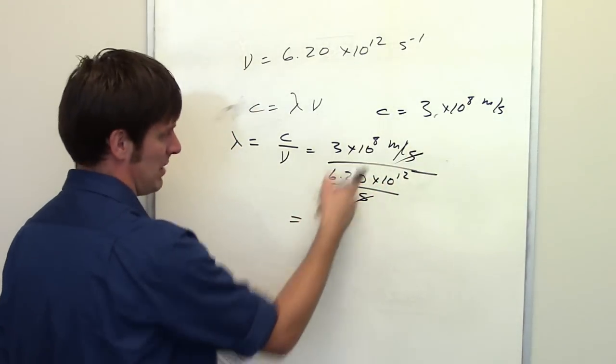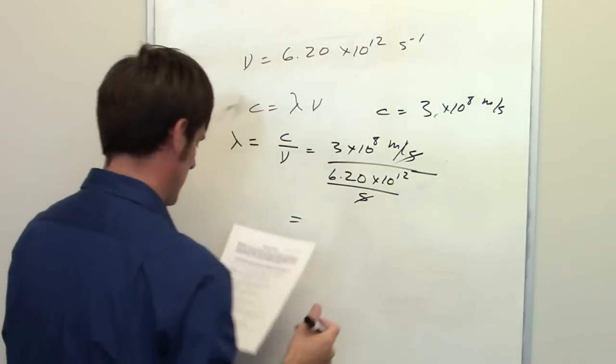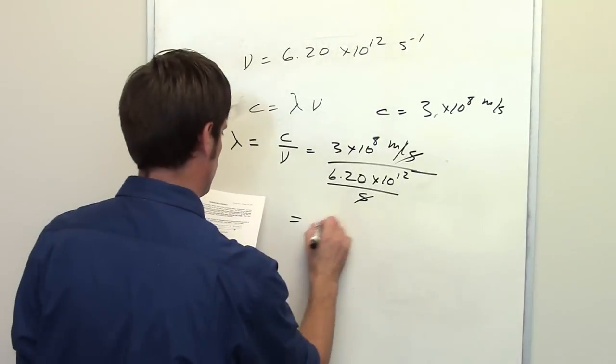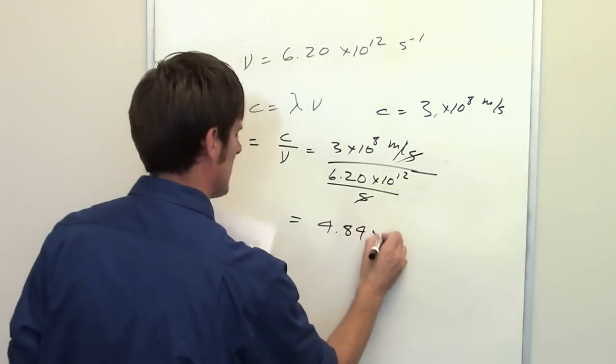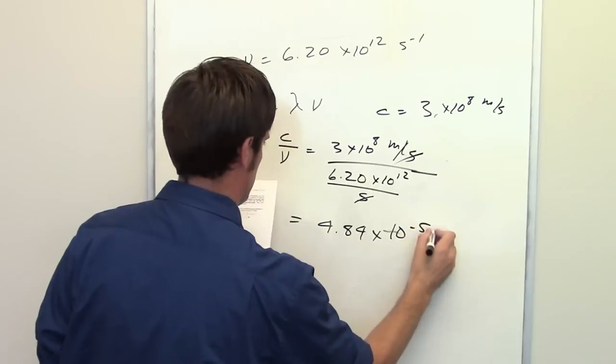Hopefully that makes sense. Plug and chug using my calculator, and the answer that I came up with is 4.84 times 10 to the negative fifth meters.